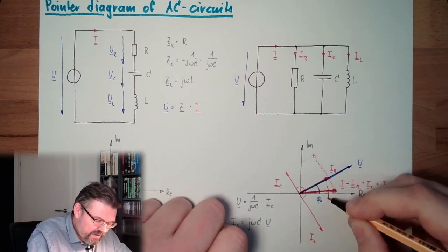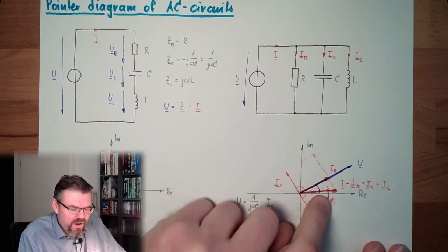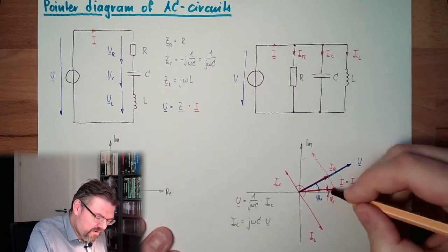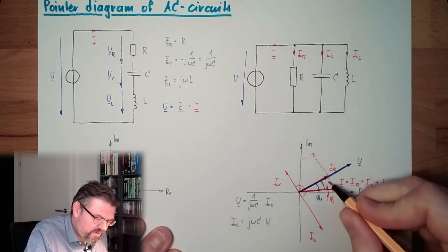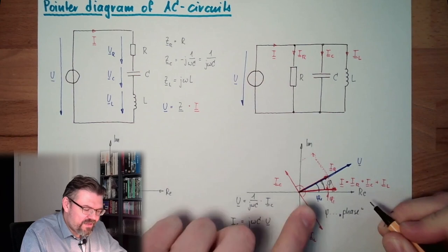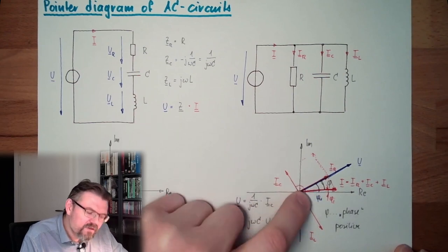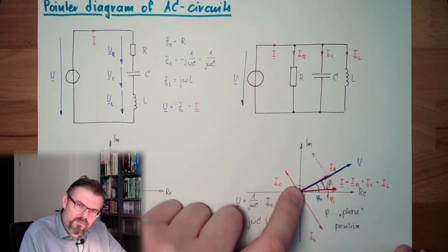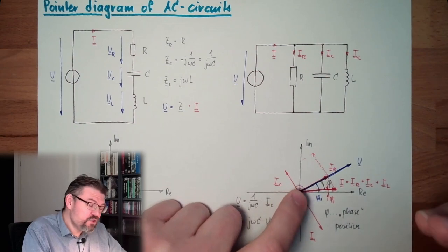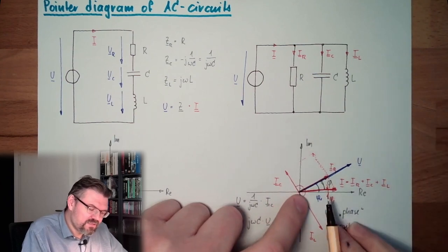We also have a tiny angle here, phi. If IL would be a little bit longer, then phi would be negative. Doesn't really matter. But in here, between those two, we also have an angle phi, and phi is called phase angle. And in this case, it's positive. We always count from the current to the voltage. You can remember this by the alphabet, I is before U, or even with English symbols, I is before V as well. So this is a positive angle.